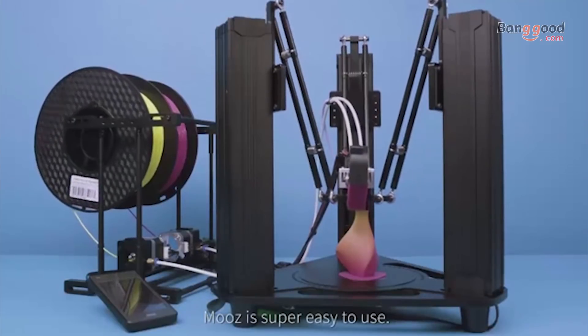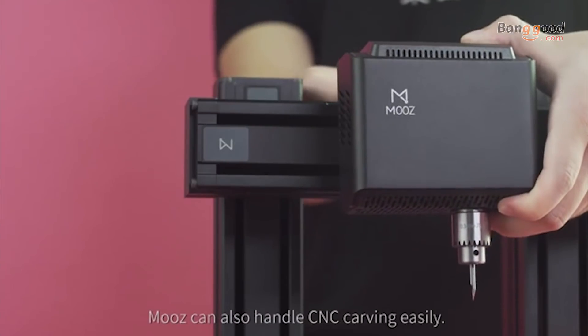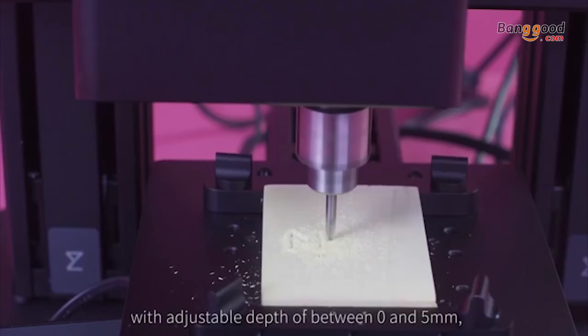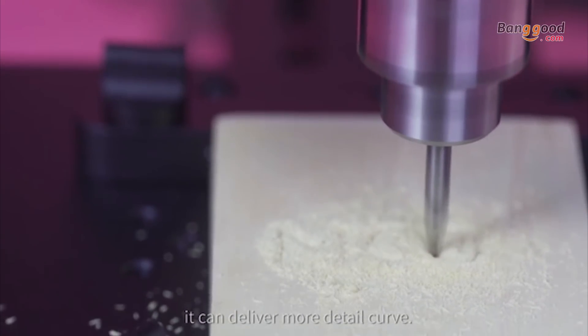Moose is super easy to use. Moose can also handle CNC carving easily with adjustable depth of between 0 and 5 millimeters. It can deliver more detailed curves.